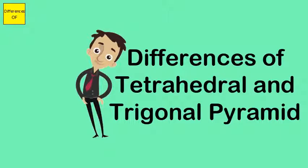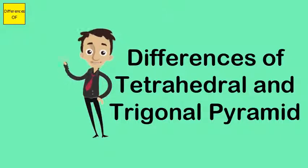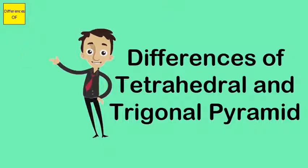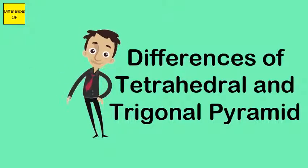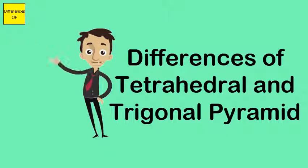The structure of a tetrahedral molecule will always be equal in length to each other. A trigonal pyramid's structure will be influenced by the lone atom at its apex.